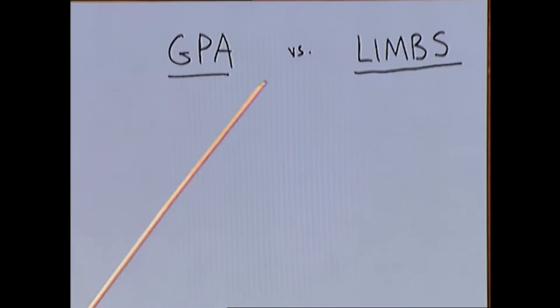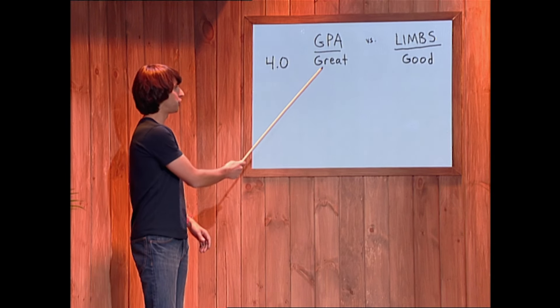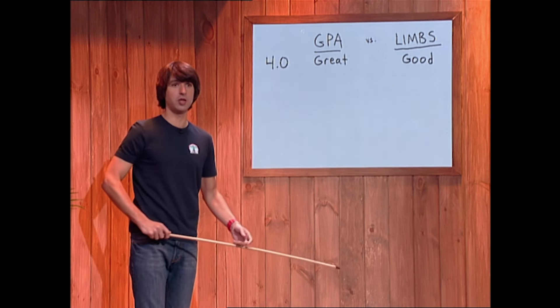This is actually very interesting. This is a GPA versus limbs. All right, let's look at the values. 4.0 for GPA, that's great. For limbs, good, good.